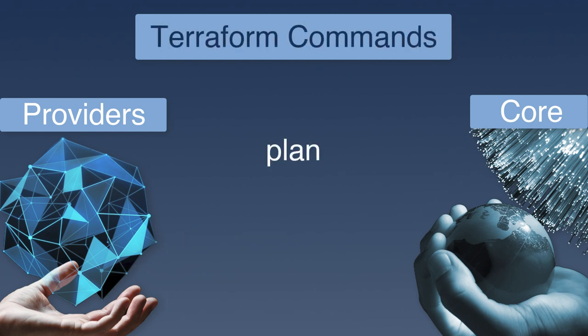With the Terraform plan command, the core creates an execution plan, which lets you preview the changes that Terraform plans to make. The Terraform apply command executes the actions proposed in the Terraform plan using the providers. The destroy command removes elements one by one in the correct order, following a plan it computes, tearing everything down.